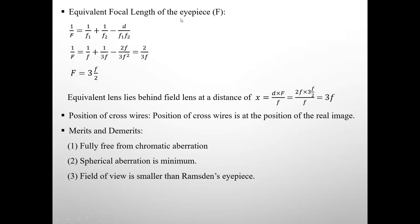We will calculate equivalent focal length of eyepiece F. 1/F = 1/F1 + 1/F2 - D/(F1F2). So 1/F = 1/F + 1/3F - 2F/(3F²). Here by putting the values we get 2/3F. Finally, we get 2/3F, so F = 3F/2. Equivalent lens lies behind field lens at a distance x = D·F/F = 2F·(3F/2)/F = 3F.